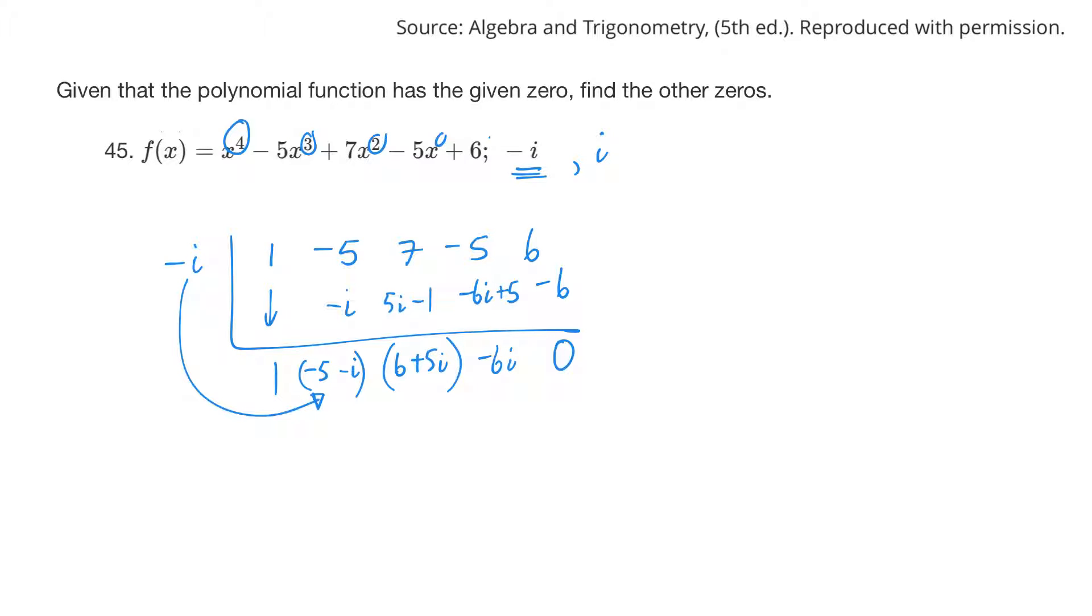But now we can keep going on the next one. So if minus i is a zero, then i has to be a zero. Let's do i. Let's bring down this one. So this would be i. Add. Minus i plus i, that's nothing, so it'll just be minus 5.